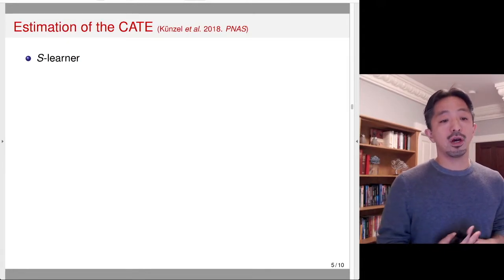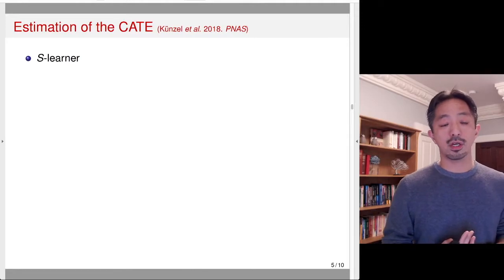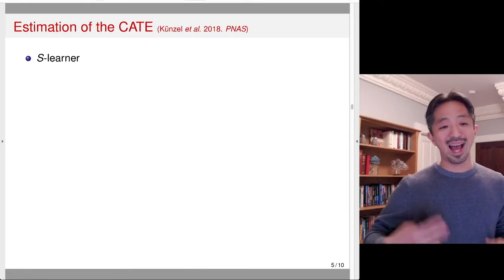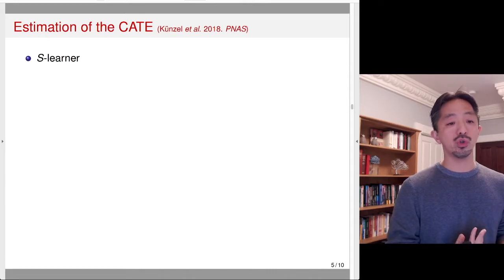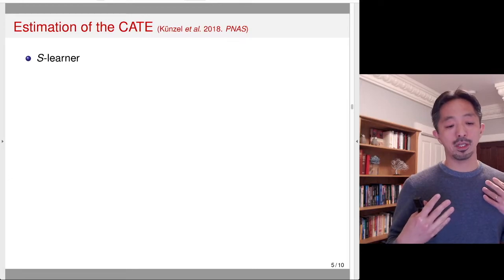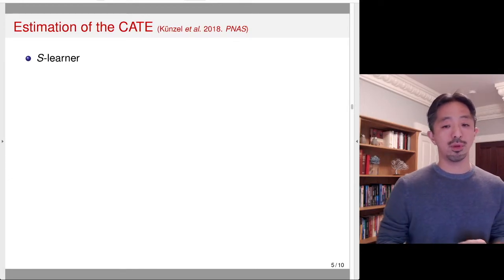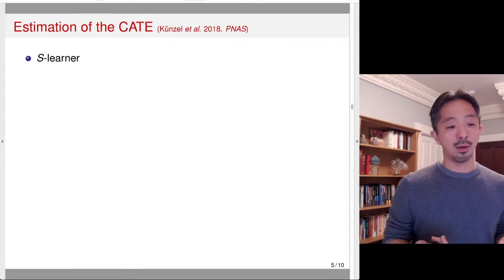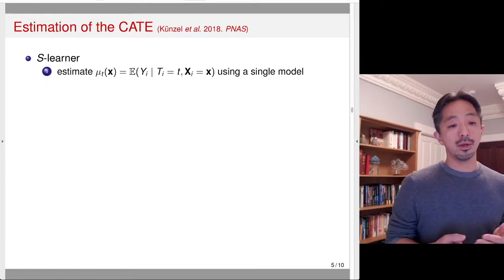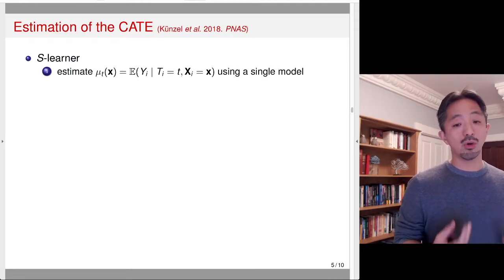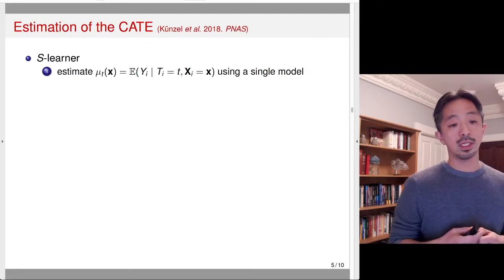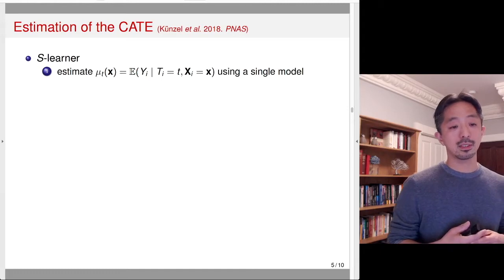So how are we going to estimate the conditional average treatment effect? Obviously, you can use a variety of machine learning algorithms to do this. We're going to look at different strategies for estimating the conditional average treatment effect. The first is called S-Learner. S-Learner uses a single model to estimate the conditional expectation function of y given t and x — so mu(t).